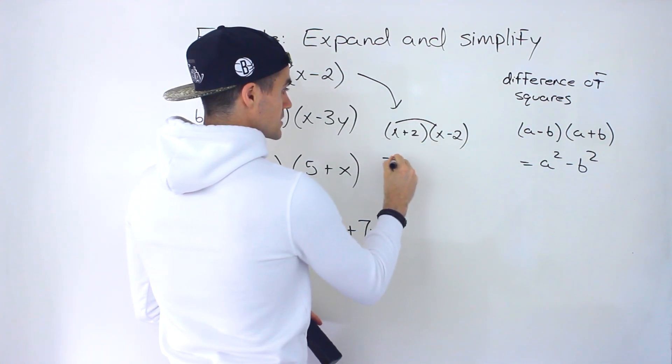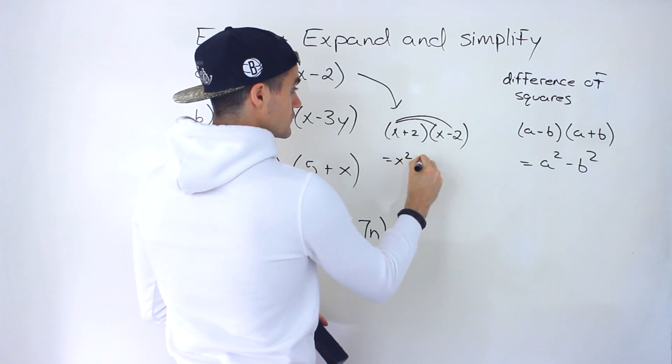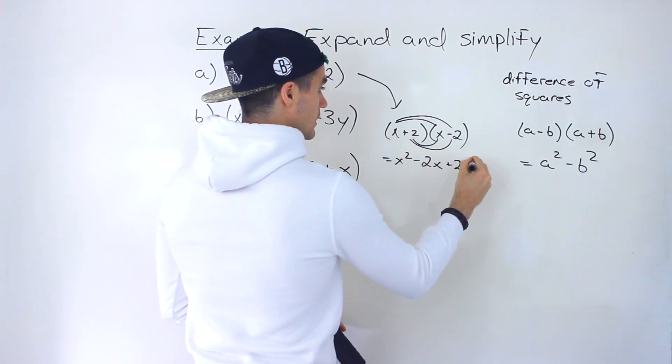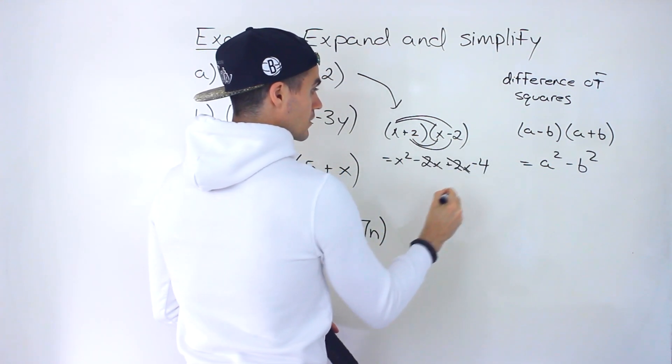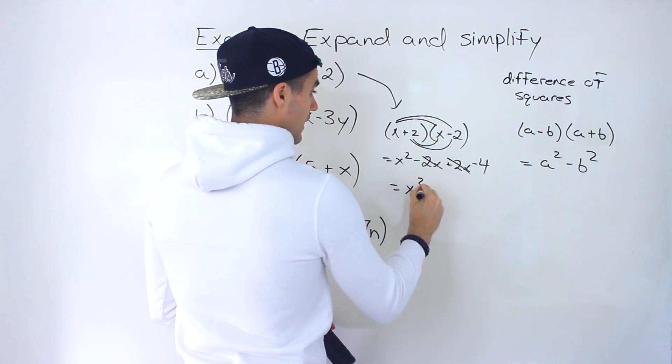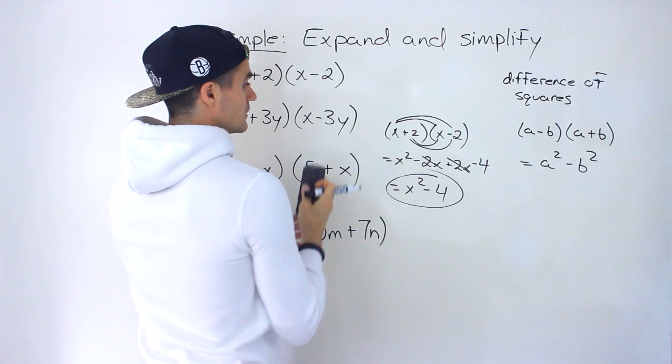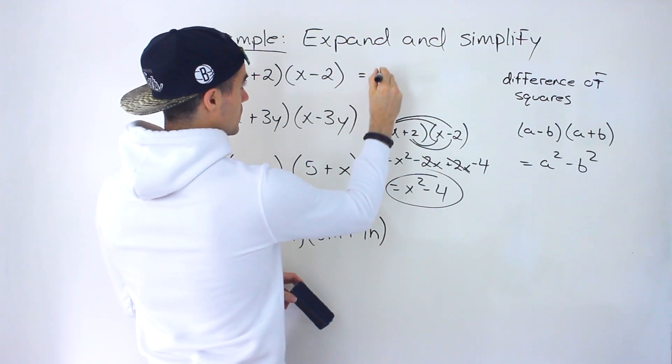We got x plus 2 times x minus 2. So if we do it manually, x times x is x squared. x times negative 2 is negative 2x. Positive 2 times x is positive 2x, negative 4. Right there, those cancel out. So we'd end up with x squared minus 4. So that's what the final solution would be for this one.